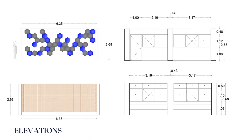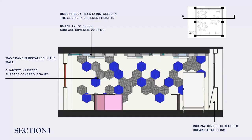This is a closer look at the elevations. We also placed wooden panels so the sound can be absorbed there as well. In this first section, we see the wall at the back of the classroom where we implemented 41 pieces of wave panels, installed on this wall with a surface coverage of 6.56 square meters. In the ceiling, you can appreciate the different heights of these panels — another model of panels used for the acoustic treatment of the classroom.